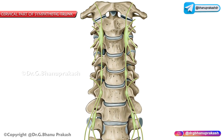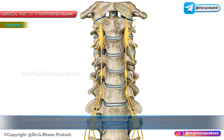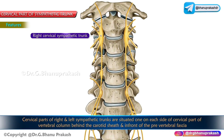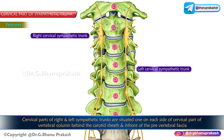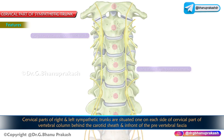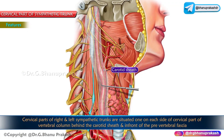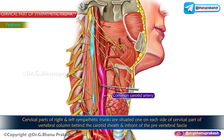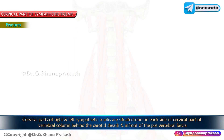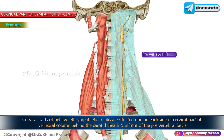The cervical part of the sympathetic trunk: the cervical parts of the right and left sympathetic trunks are situated on either side of the cervical part of the vertebral column, behind the carotid sheath where it encloses the common carotid as well as internal carotid arteries, and in front of the pre-vertebral fascia. This is the anatomical location.